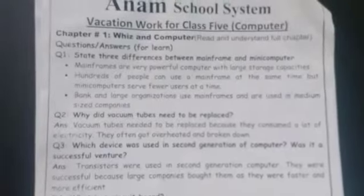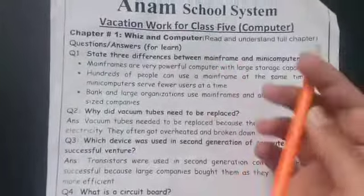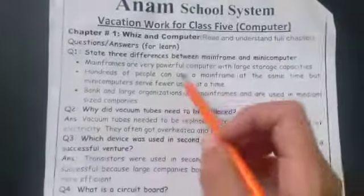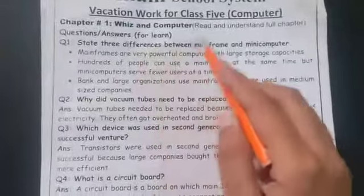It's page number 8 of chapter number 1. You have some activities given in this chapter: label the computer and devices, and match the computer to the devices they used. This is an activity for you to perform. We are going to sum up chapter number 1 in the form of a few short question answers.